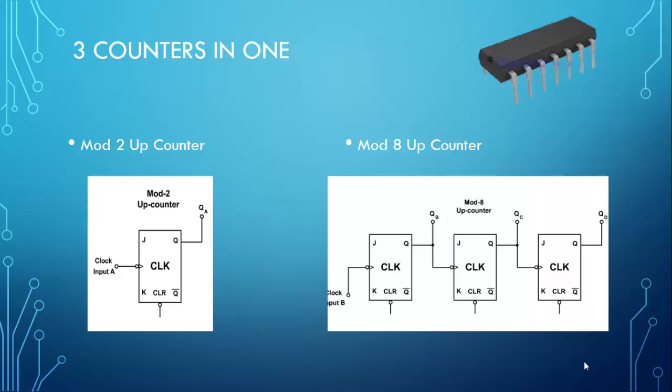So these are the two counters that are actually built in internally. One mod 2 made from one JK flip-flop and one mod 8 made from three JK flip-flops. Remember that when you look at this, the clock is the least significant bit, and then the one furthest away would be the most significant bit. So from this one you could count from 0 to 7, and on this one you could count 0 and 1. They're both built in to this one integrated circuit.